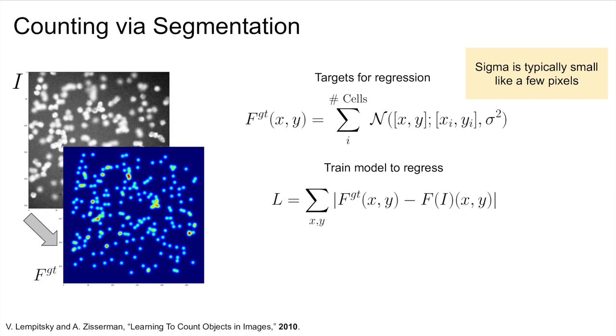Instead, simply subtracting the prediction from the ground truth and applying an absolute or squared loss will train the model. Here it is shown using an absolute loss.